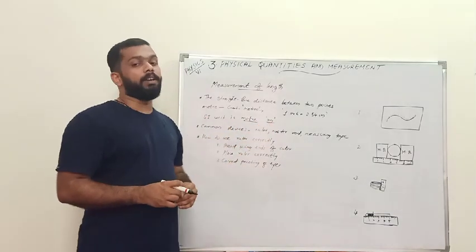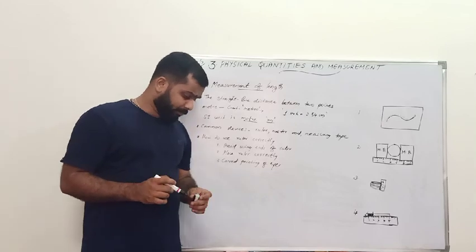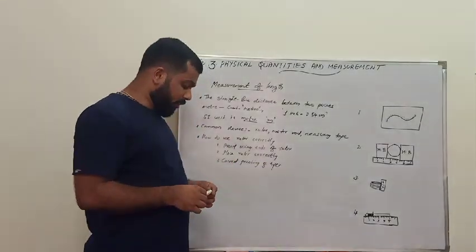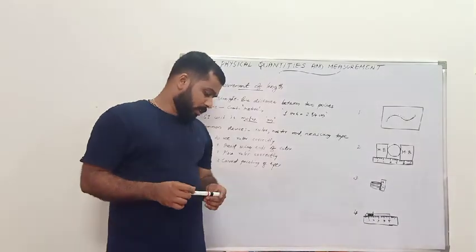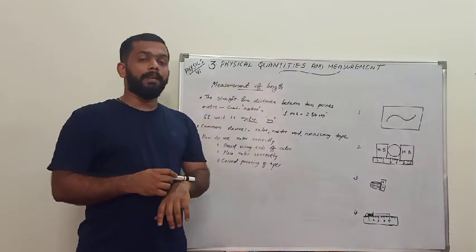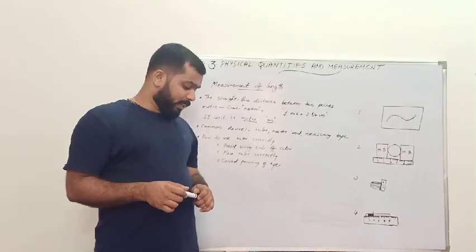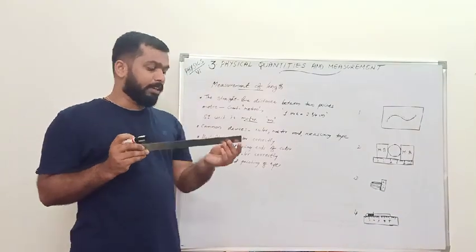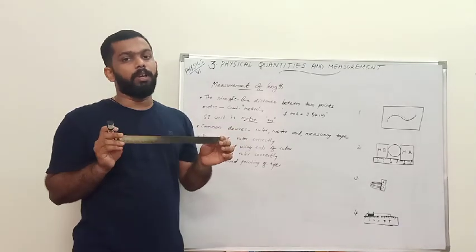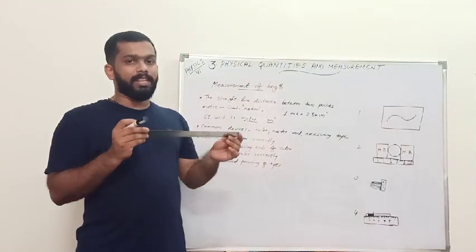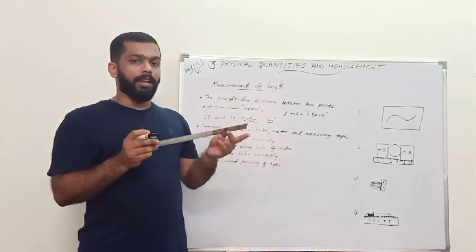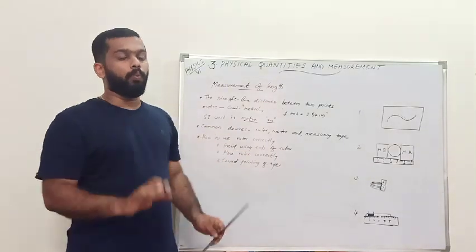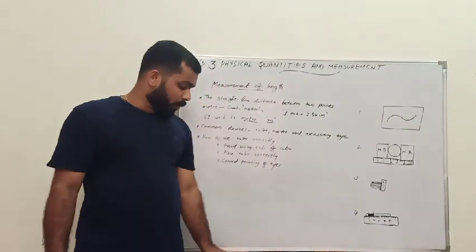Now, if the SI unit is meter, how can we define one meter? One meter can be defined as the length between two marks on a platinum-iridium bar kept in the International Bureau of Weights and Measures in Paris. It is an alloy made up of platinum and iridium, kept at 0 degrees Celsius, and the distance between the two markings on that rod is called one meter.